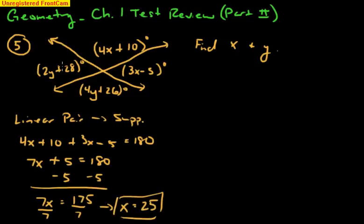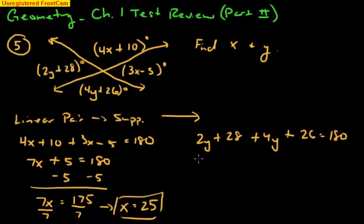So if I do the similar thing for y, again, look, the two angles with y are adjacent and they form a line. Again, they are a linear pair. So we do the same idea. Linear pair, same idea. 2y plus 28 plus 4y plus 26 should equal 180 degrees. And we combine our like terms.